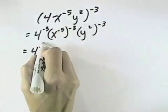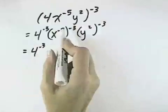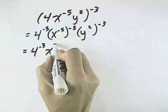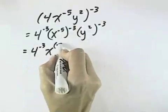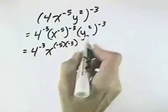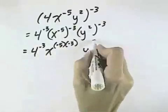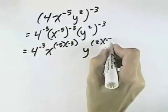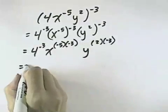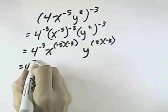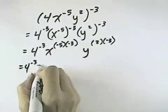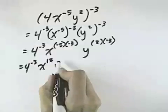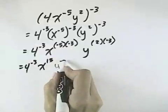In this case, when we have more than one exponent for the same base, you can multiply the exponents together. So this would be negative 5 times negative 3, and the y would be to the 2 times negative third power. So that gives us 4 to the negative 3, x to the positive 15, and y to the negative 6.